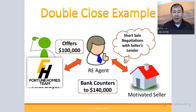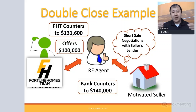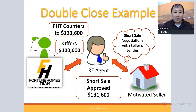The bank — Bank of America — had a backlog and didn't review the case for nine to twelve months. When they did, the market had changed and they countered at $140,000. I disputed their valuation and countered at $131,600 — an odd number designed to suggest detailed analysis — and they approved it at $131,600.